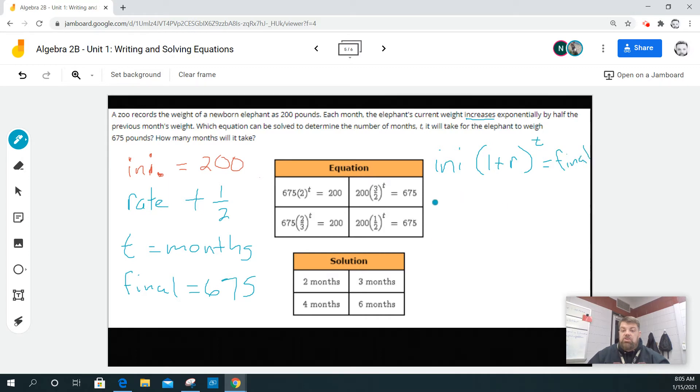So then it should be 200 times one plus one half is equal to 675. Well, one is the same as one over one. Another way to write one would be, because I've got to have a common denominator. I could say 200 times two over two, that's the same as one, plus one half.